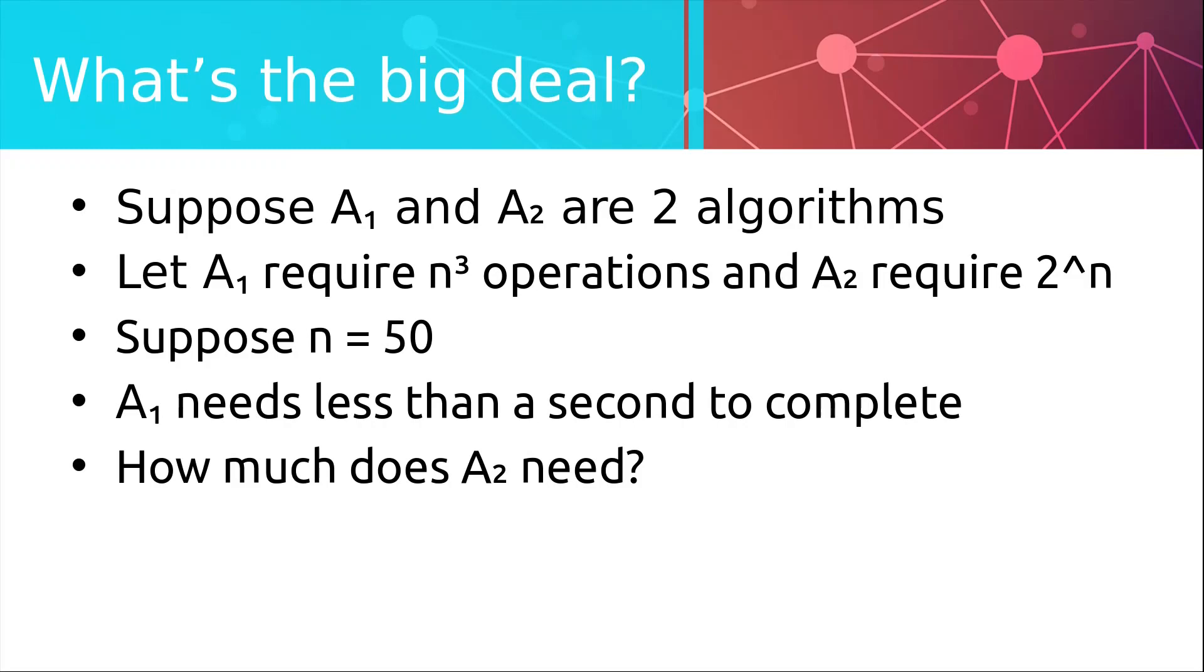Let's run some experiment. We will assume we have a really fast computer that can do 1 billion operations per second. Suppose we have one easy problem solved with algorithm A1, which needs n cubed operations to solve, and one hard problem solved by algorithm A2 needing 2 to the n operations. Well, if we have n equals 50, with A1, we need less than a second to finish. How long do you think A2 needs? 10 seconds? 15 seconds? Well, in fact, we will need to wait over 13 days to finish.